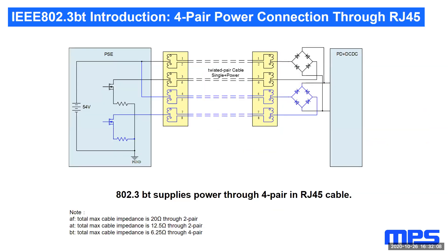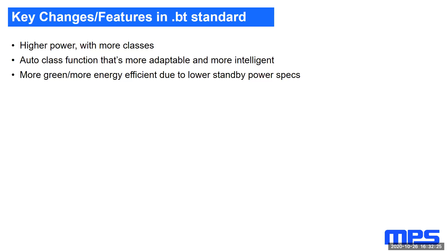802.3AF and AT support power transfer through two pairs of wiring, while 802.3BT supports four pairs, enabling the higher power ratings required by BT. There are clear benefits to using the BT standard. For applications requiring higher power like 45 to 90 watts, BT is the right choice. The auto classification function allows the system to operate more intelligently, and it's also greener due to lower standby power requirements.